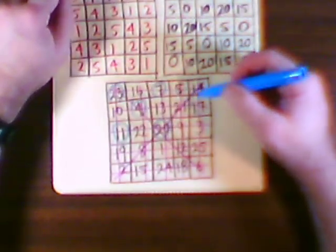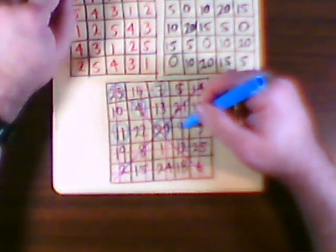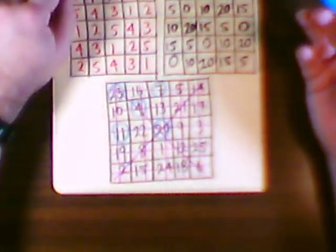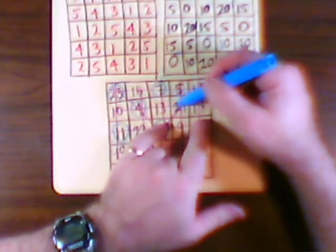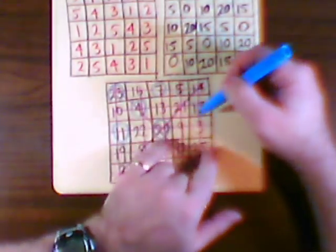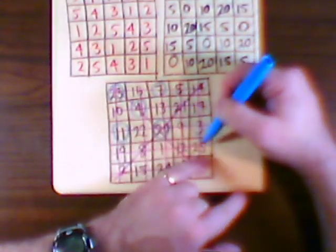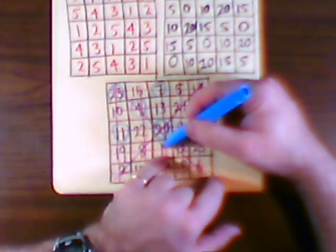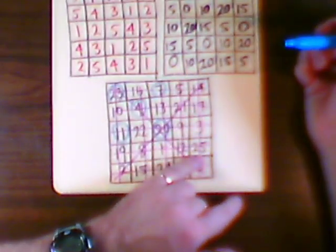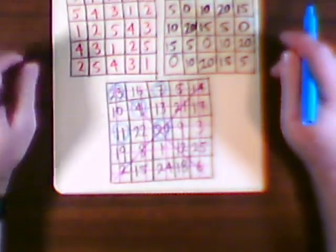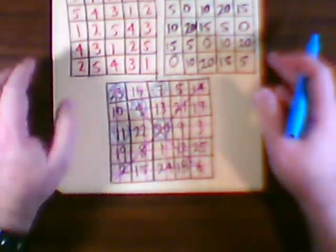That begs the question — does this arrangement also work out to 65? That's something else I hadn't tried. 13 and 17 is 30, and 9 makes 39, and 1 makes 40, and 25 makes 65. So that's a lot of ways to get 65.